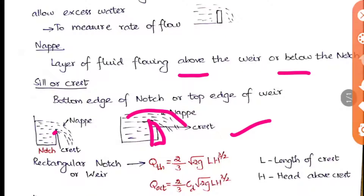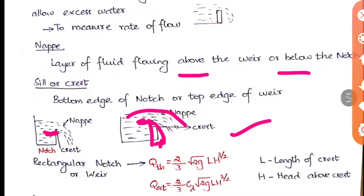The sill or crest, when referring to a notch, is the bottom edge of the notch — this bottom portion through which water flows is called the crest. When you take a weir, it is the top edge of the weir. This is your weir, so the top edge — or equivalently the bottom line of the water flowing — is the crest. This is the correct definition they will ask in questions. So nape and crest are very important points.